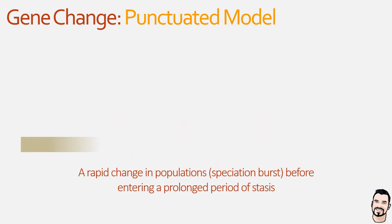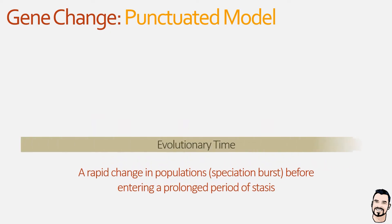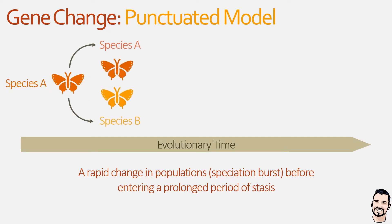As an example, we can see species A which has been in stasis for a prolonged period of time. Then there is a period of rapid change resulting in a new population which is different enough to the point it doesn't interbreed and therefore is given a new species name, species B. This new species and the original species then go back to a period of prolonged stasis.